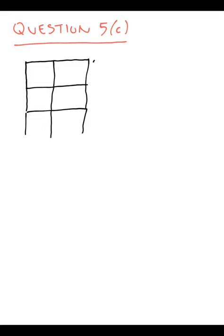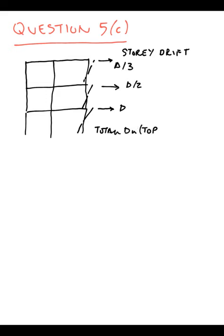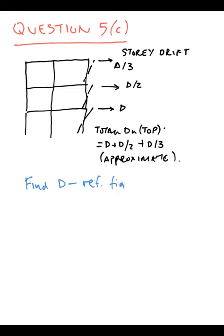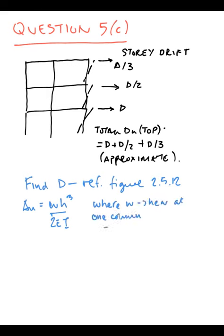Question 5(c): Now we're going to look at story drift, which is using an approximate calculation which may be found in the book. Each drift height, each drift deflection, is given as those ratios based on the one at the bottom. So the deflection WL³/2EI, where W is the shear at one column.